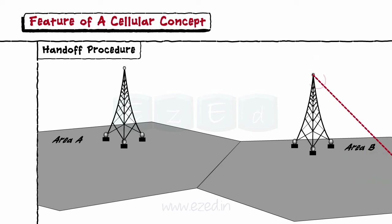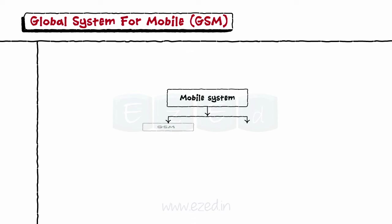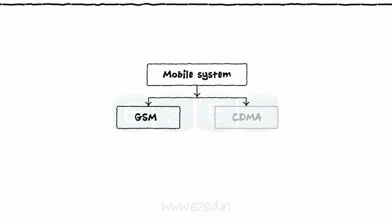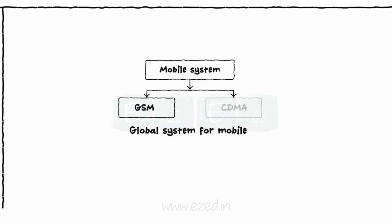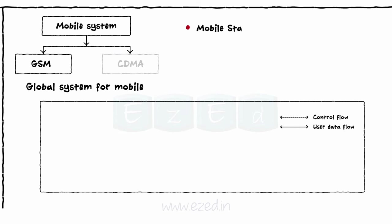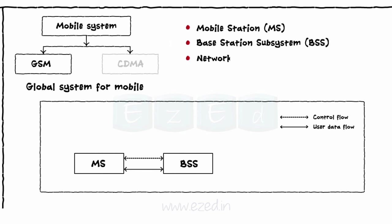There are two types of systems available: GSM and CDMA. We will study the basics of the GSM system. GSM stands for Global System for Mobile. GSM is a big system made up of smaller subsystems: mobile stations (MS), base station subsystem (BSS), network and switching subsystem (NSS), and operating subsystems (OSS).